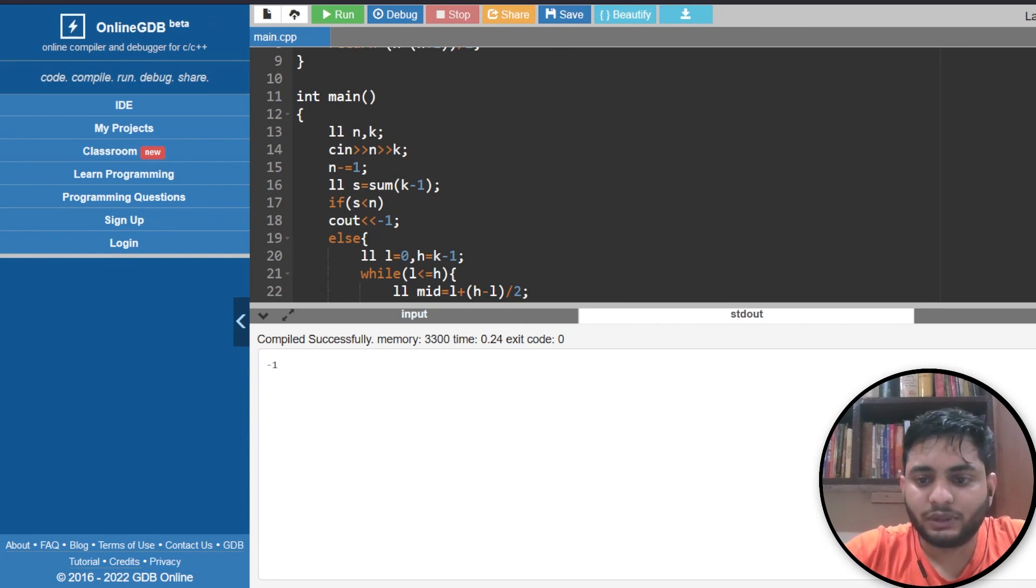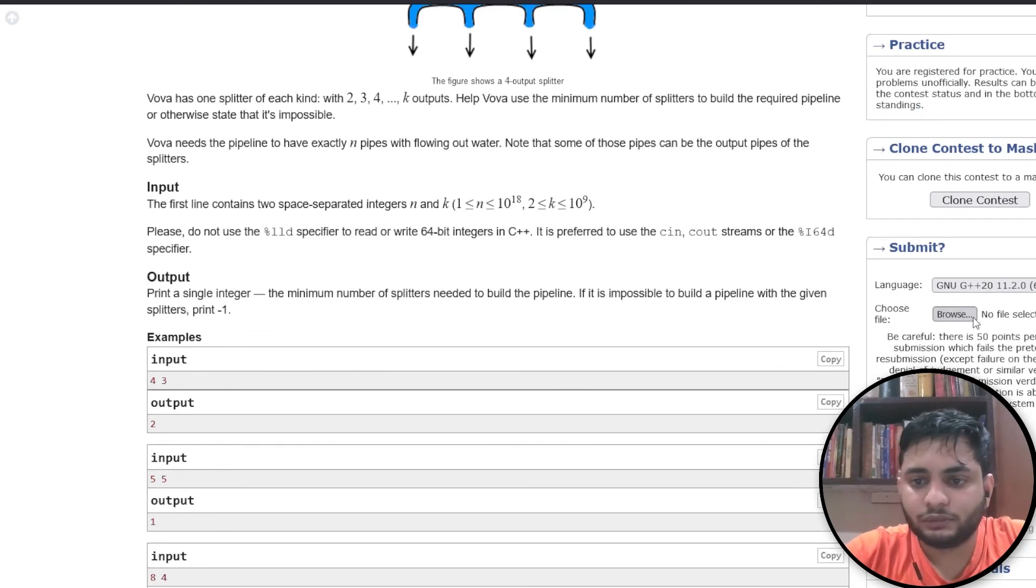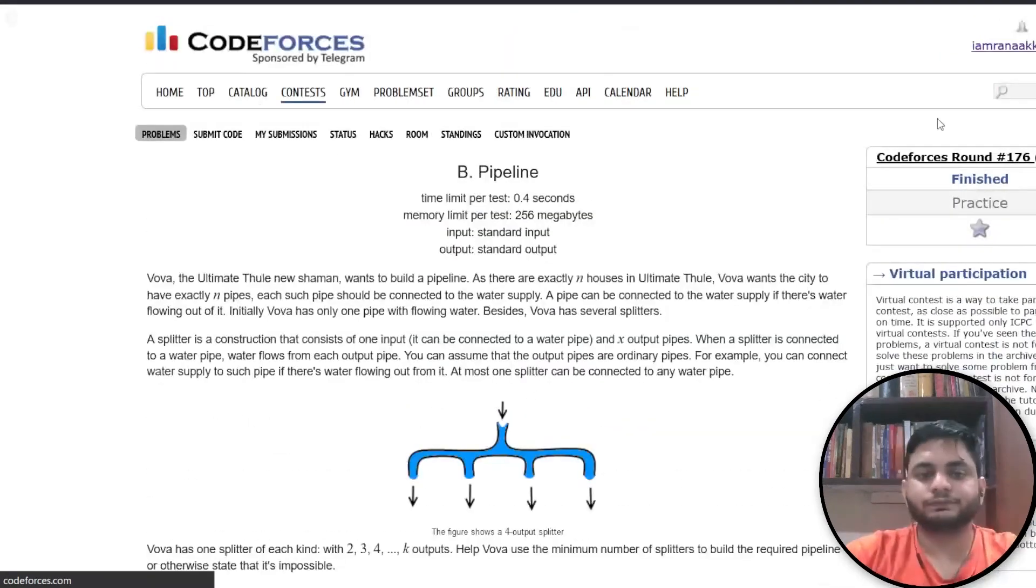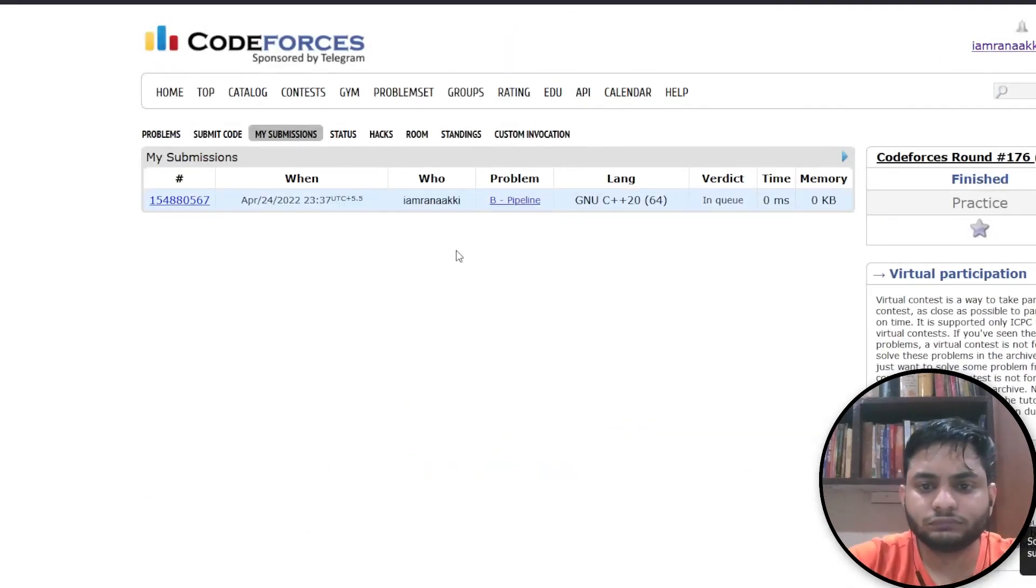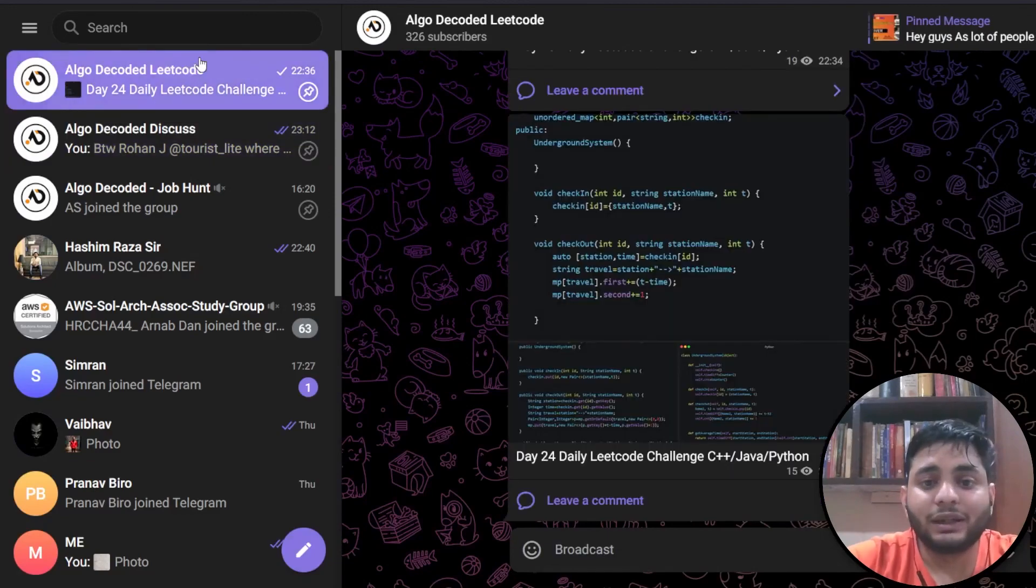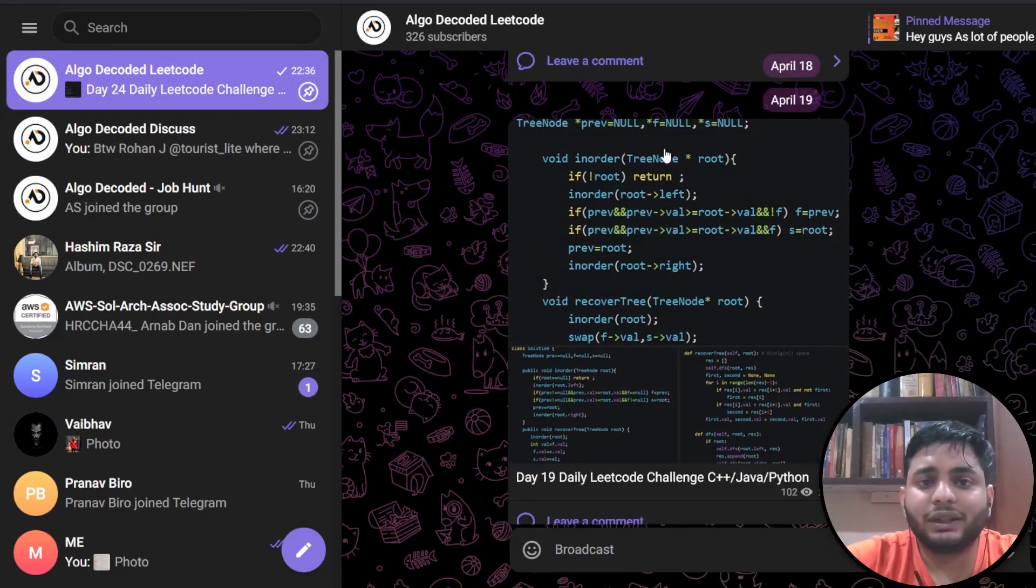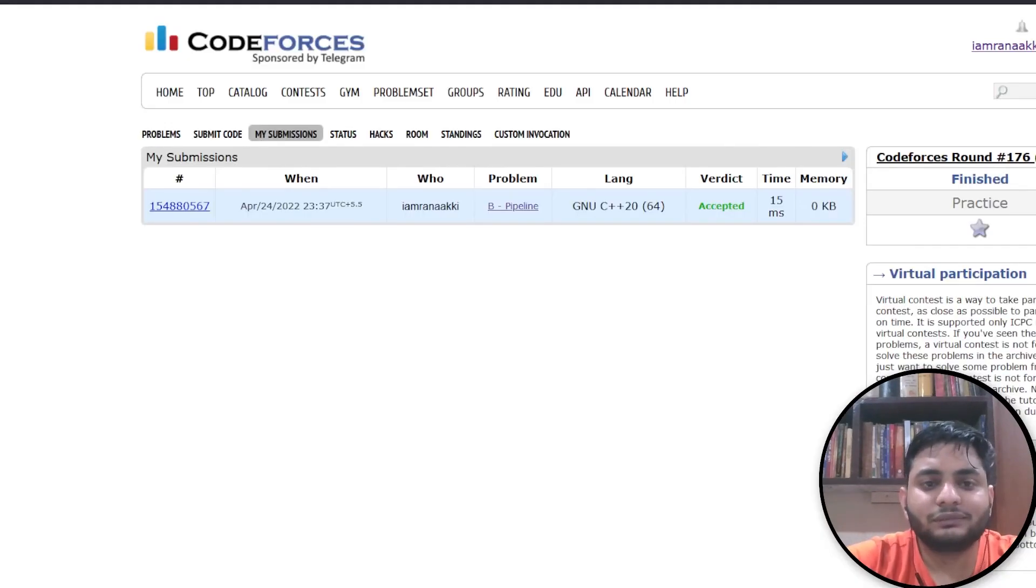This is question number three. Let's move to the submission part. The pipeline is in queue showing accepted. So yeah guys, this is it. I'll see you in the next one. If you find this video helpful please like and share it with your friends. If you have any queries you can join the telegram group where I post daily LeetCode challenges. That's it, see you in the next one.